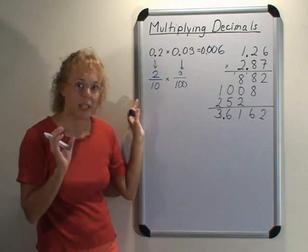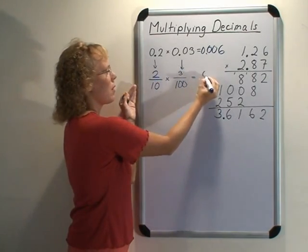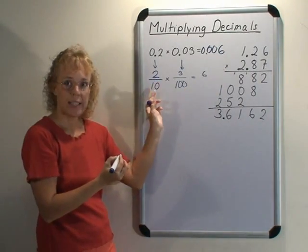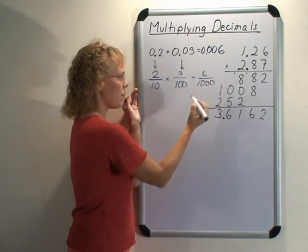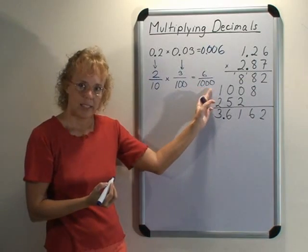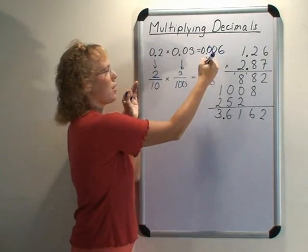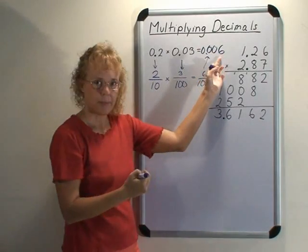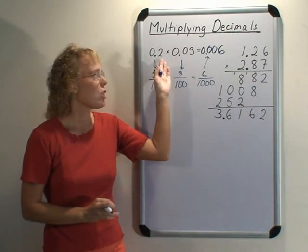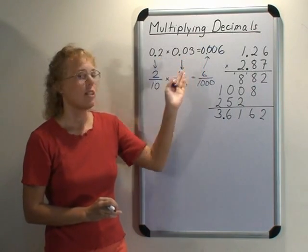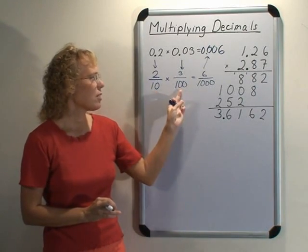Now we use fraction multiplication. So we go 2 times 3, just multiply on the top, and then multiply on the bottom 10 times 100, which is a thousand. And here we have three zeros. So the answer has to have three decimal digits. The answer has to have thousandths here. So that's where this rule of looking at the decimal digits and how many there are in the factors comes from. It comes from fraction multiplication. Here we have ten, hundred, and thousand.